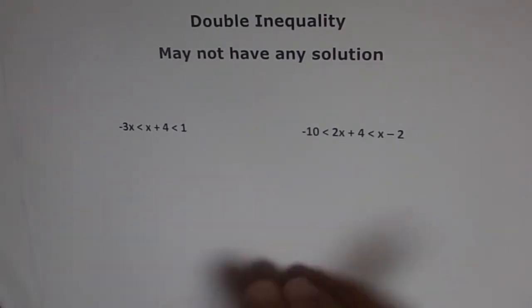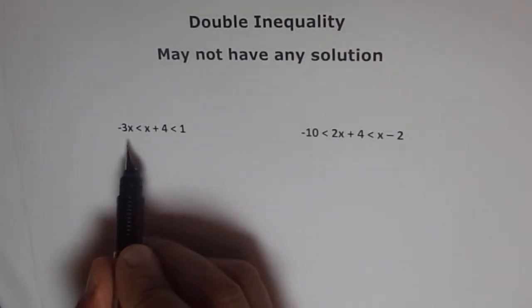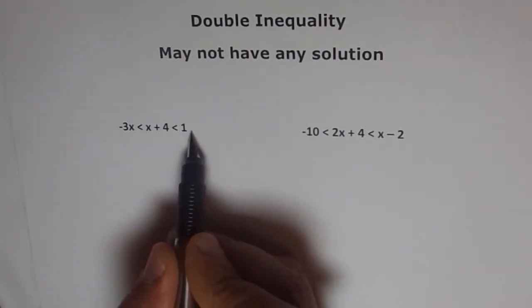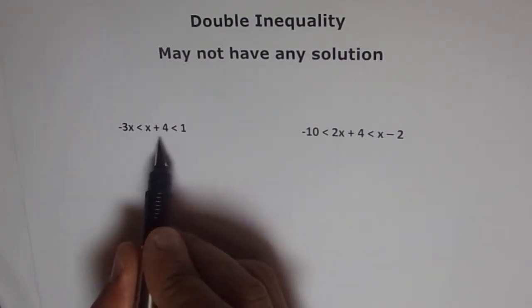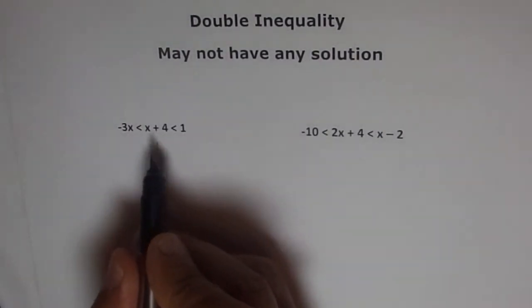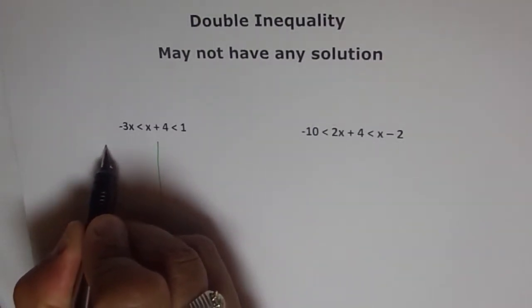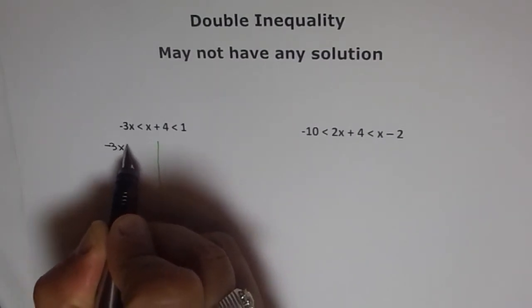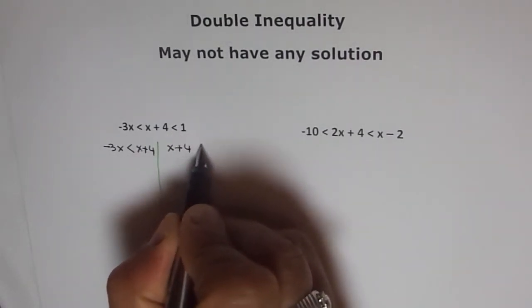You already know the process of doing this. Now when we have x's like this, then we really cannot eliminate this x because there are x's at two places. If I take away x, then we can introduce one there. So the only way to do it is to split this into two halves. We will split it into two different halves and then solve them simultaneously and check for a common domain when the linear inequality is true. So one is we'll solve for minus 3x less than x plus 4. And the other one will say x plus 4 is less than 1.